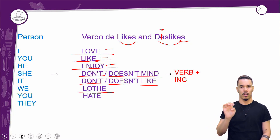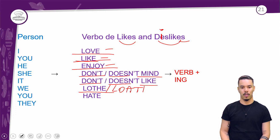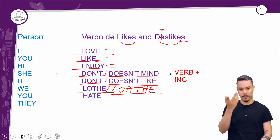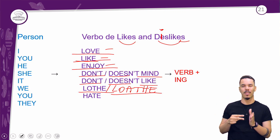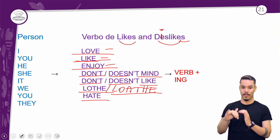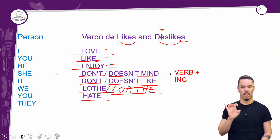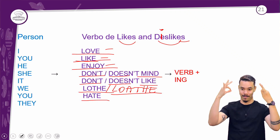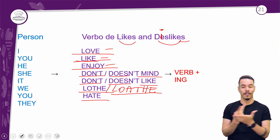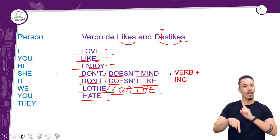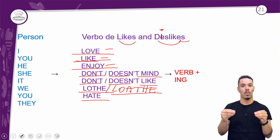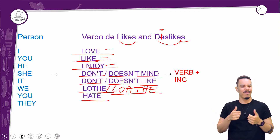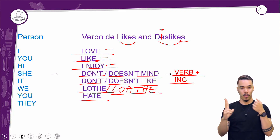Loathe — que na verdade também tá faltando um A aqui, perdão os meus erros de digitação — é essa questão de você detestar, que é um nível abaixo de hate, que é odiar mesmo. E aí o que acontece com esses verbos? Você vai usar eles e logo em seguida vai ter que dizer o que você gosta ou não gosta, e esse outro verbo vai vir com ING.